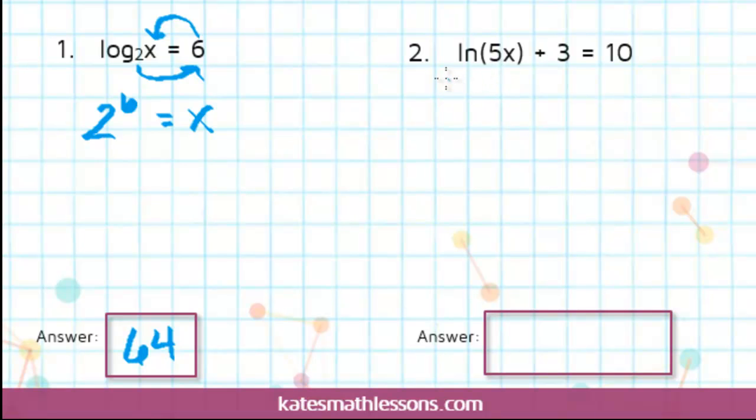So if you want to, you can rewrite this as the log base E of 5x plus 3 equals 10, if that helps you solve it a little easier. Before we can rewrite it in exponential form, we need to make sure we get the log part by itself. This one has a plus 3 here, so our first step needs to be to subtract 3 from both sides.